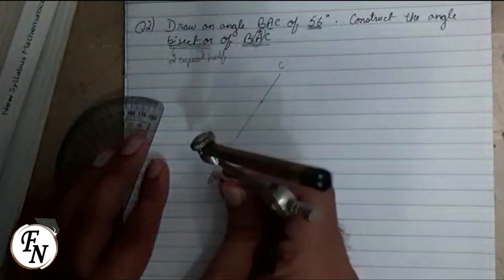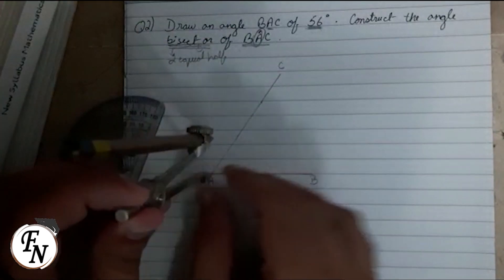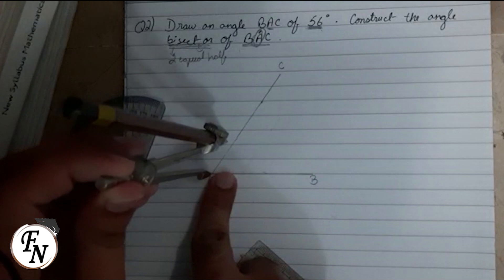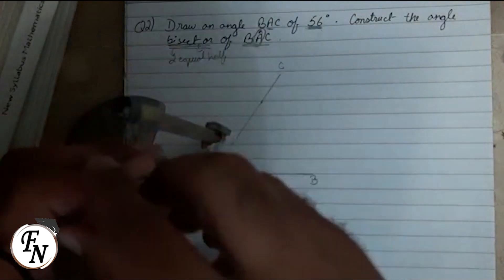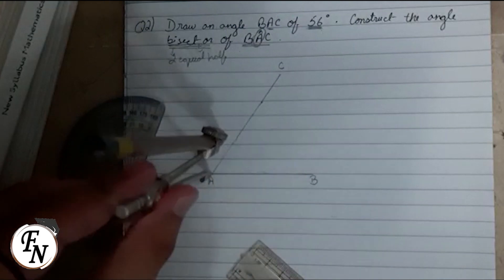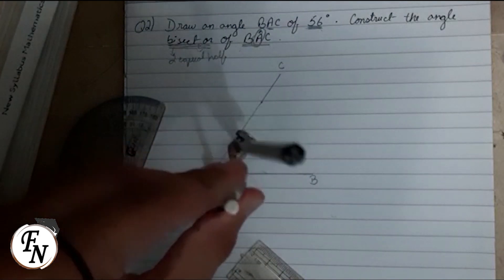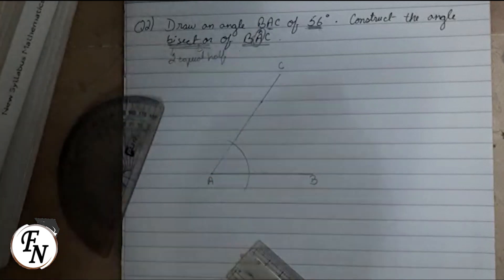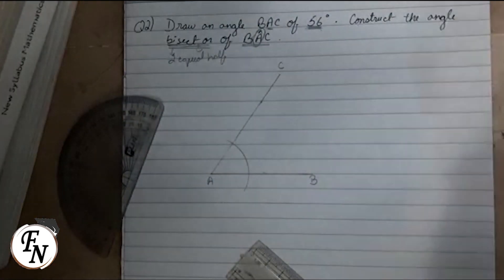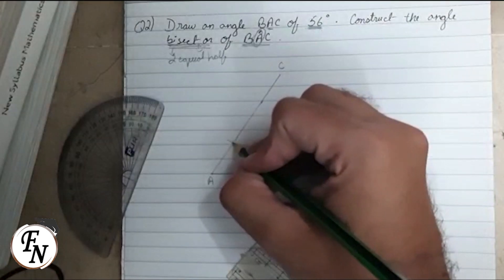We will keep our compass at point A where we have drawn an angle of 56 degrees, and then we will draw an arc cutting both the lines. Like this, we have obtained two points.